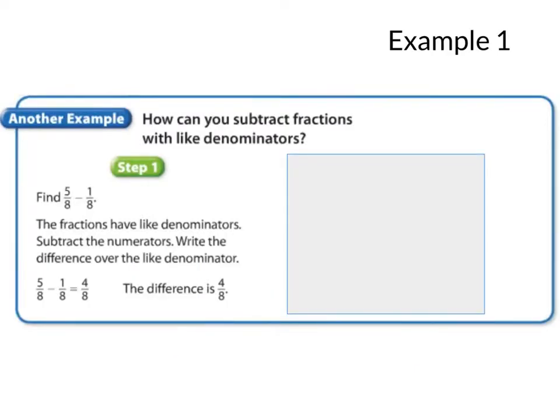So, let's talk about example one. And anything that I need you to write down, I will circle in red. How can you subtract fractions with like denominators? Step one. Five-eighths minus one-eighth. Well, first we're going to subtract the numerators, which I know is the top number. Write the difference over the like denominator. Five minus one is four, and we carry the eight over. The difference is four-eighths.